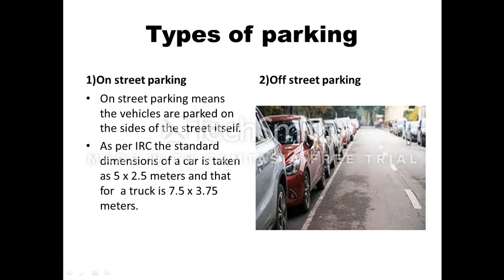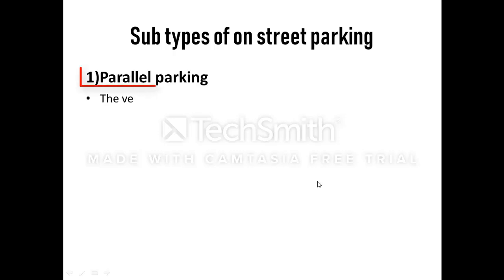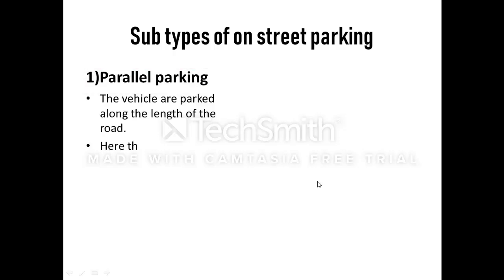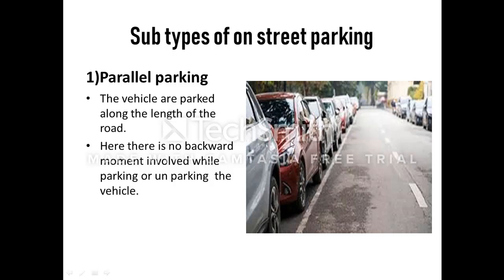Look at this picture. This is your road — the main carriageway. Vehicles are parked on both sides of the road; this is a parallel park. There are sub-kinds of on-street parking. The first one is parallel parking. In parallel parking, the vehicles are parked along the length of the road, parallel to the direction of the road.